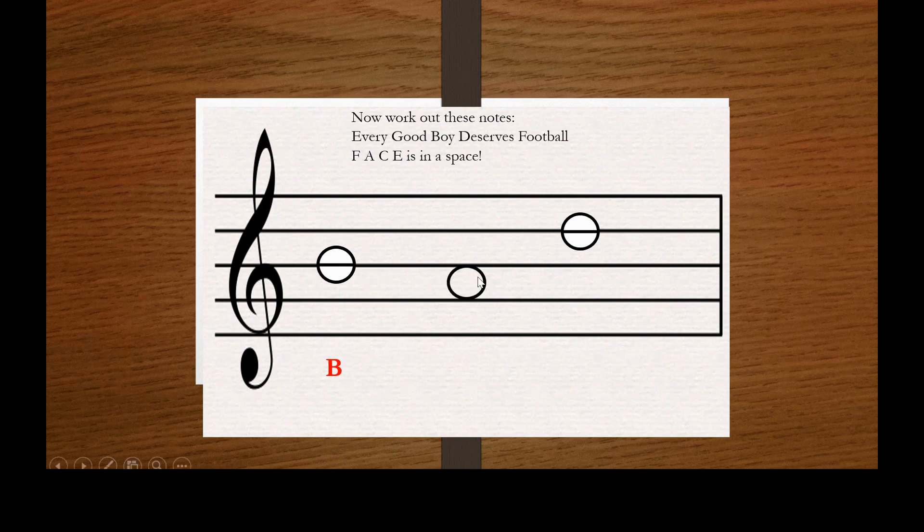I look at the next note. This is in a space, so I'm going to use FACE. I start in the bottom space: F, A. And then this one, again, it's a line, so I'm going to count the lines: every good boy deserves. And I end up with the word bad.